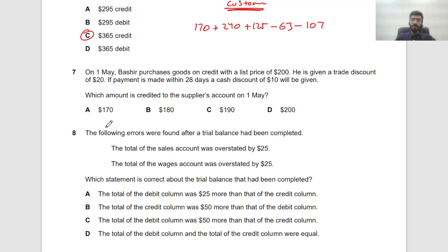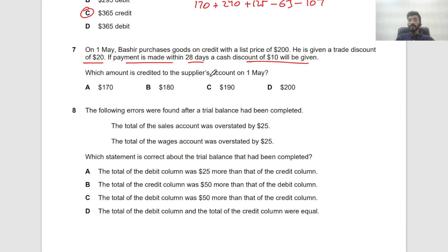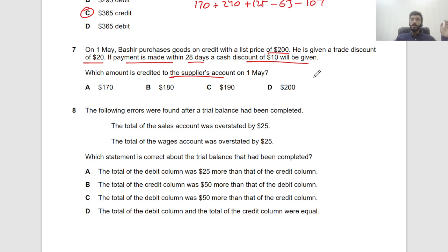Question 7: On 1st May, Basheer purchases goods with a list price of $200. A 20% trade discount is given, and a 10% cash discount if payment is made within 28 days. The cash discount is conditional, so it's not recorded at purchase. Trade discount is always removed — the purchase value credited to the supplier's account is $200 × 80% = $160. Wait, that's $200 minus 20% = $180. The purchase is recorded at $180.